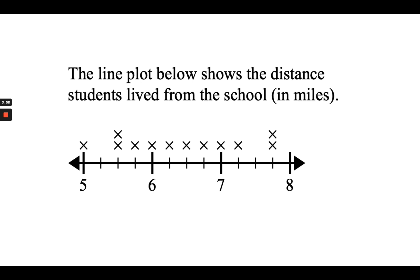The next question is: how many students lived six or more miles from school? Starting at six, I'll count all the X's: one, two, three, four, five, six, seven, eight. There are a total of eight students that lived six or more miles from school.